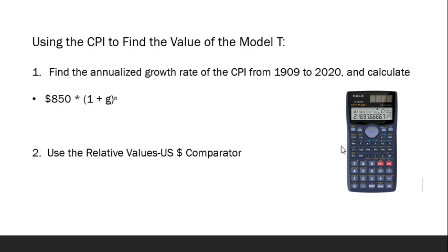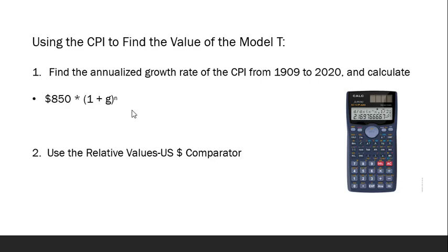There are two main ways that we can use Measuring Worth to help us with this calculation. First, we can find the annualized growth rate of the CPI from 1909 to today, or as recently as we have data, and then calculate the total growth of $850 over that time period. The formula looks like this. Here, G stands for the annualized growth rate of the CPI, and N stands for the number of years the CPI is growing or compounding over time. So we can do this calculation if we go to measuringworth.com to find G.